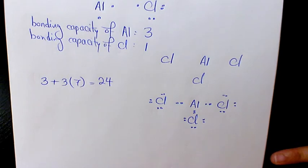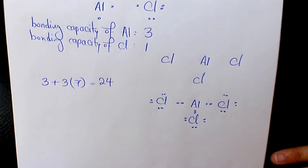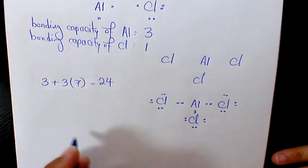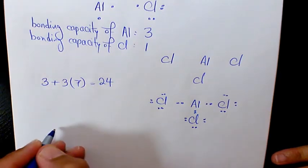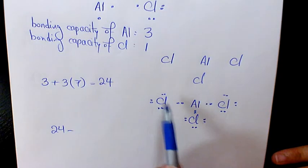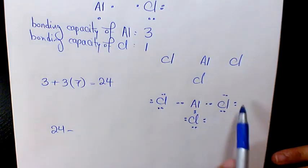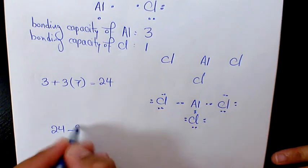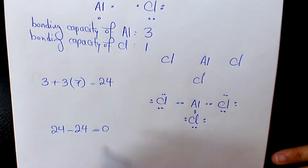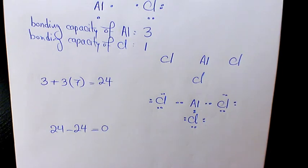Then what we need to do, we need to find out how many available electrons we have, by subtracting the number of electrons used so far from the total number of available valence electrons. So we had twenty-four, and we used twelve pairs — that's twenty-four electrons. Twenty-four minus twenty-four is going to be zero, so we have no more electrons left.